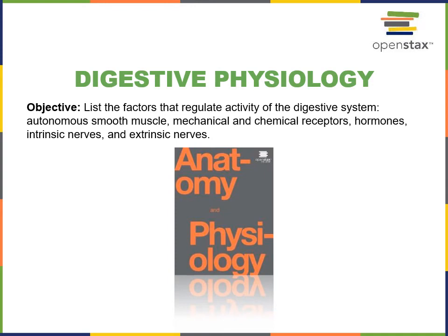This video will cover the following objective from digestive physiology: list the factors that regulate the activity of the digestive system — autonomous smooth muscle, mechanical and chemical receptors, hormones, intrinsic nerves, and extrinsic nerves.